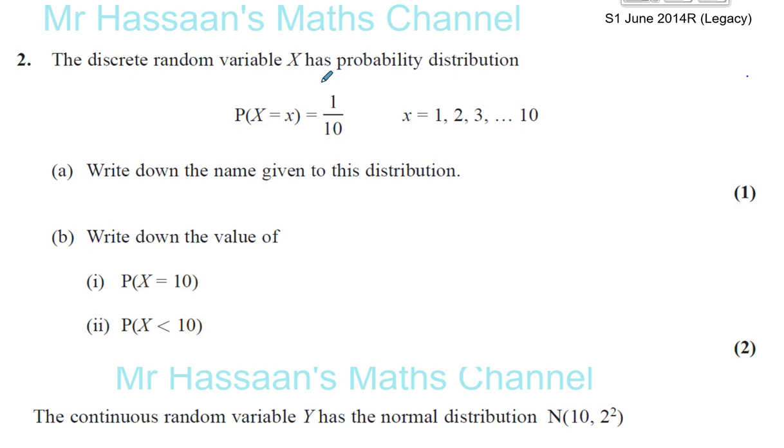We're told about a discrete random variable. Discrete random variable X has a probability distribution P(X=x) is 1 over 10, for x equals 1, 2, 3, all the way up to 10.